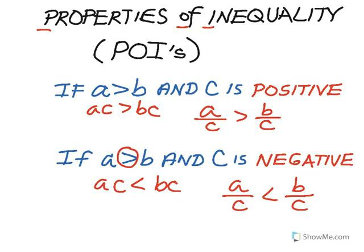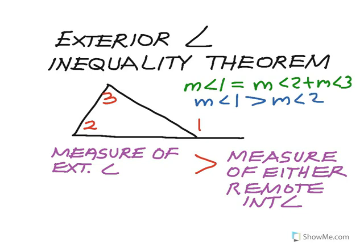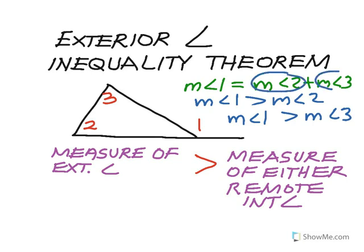An application of the properties of inequality is the exterior angle inequality theorem. This theorem says: if we know that angle one equals the sum of the two remote interior angles — angle two and angle three — then individually angle one must be greater than both of those. So angle one must be greater than the measure of angle two, and also greater than the measure of angle three. Simply stated, the measure of an exterior angle of a triangle is greater than the measure of either remote interior angle.